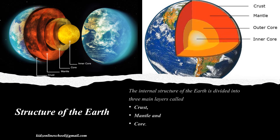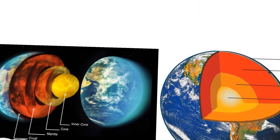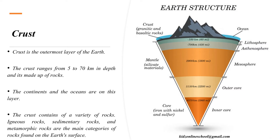Now we are going to see about the structure of the Earth. The internal structure of the Earth is divided into three main layers called crust, mantle, and core. The crust is the outermost layer of the Earth. The crust ranges from 5 to 70 km in depth and is made up of rocks. The continents and the oceans are on this layer. The crust contains a variety of rocks — igneous rocks, sedimentary rocks, and metamorphic rocks are the main categories of rocks found on the Earth's surface.